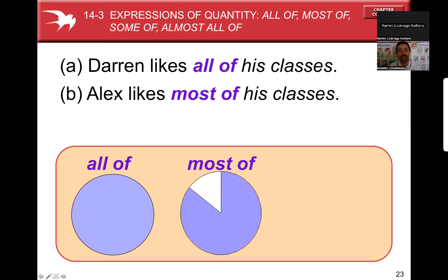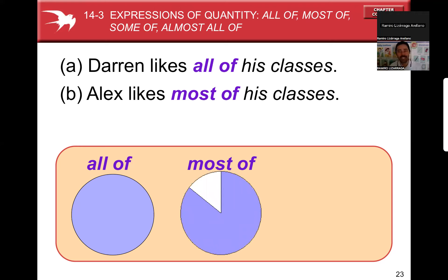But if I'm using 'most of' — if I say Alex likes most of his classes — what does it mean? It means that there is one class he doesn't like. Maybe it's English, maybe it's Spanish, maybe it's math, chemistry, physics — I don't know. But there's one class he doesn't like. That's what 'most of' means.